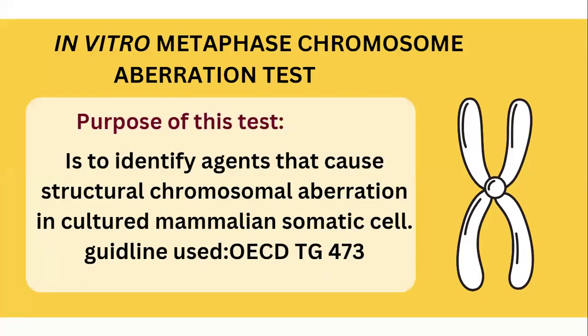The next test is the in vitro metaphase chromosome aberration test. In this test, we examine chromosomal abnormality under metaphase conditions. The purpose is to identify any chemical agent that causes structural chromosomal aberration in cultured mammalian somatic cells. The guideline used for this test is OECD-TG 473.